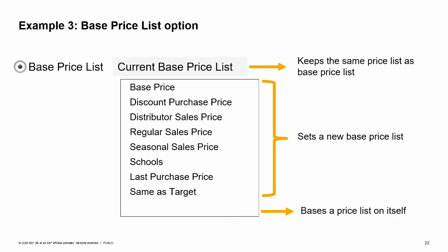If you choose current base price list, the base price list remains the same and you can choose a new factor. This is what we would do in this example — we want to keep the base price list but just adjust the factor. Or you can choose a different price list as a new base; you can pick any existing price list. Another option is to base a price list on itself, which you would typically do when you no longer want a price list to be automatically updated. Once you choose same as target with a factor of 1, you can maintain that price list directly either in the wizard or directly in the price list window.